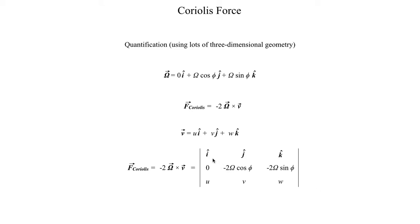We can evaluate it like the determinant of a 3x3 matrix. After all the messy math, we get an expression that looks something like this. Minus 2Ωw, which is the vertical component of the wind, cosine φ, which is our latitude.